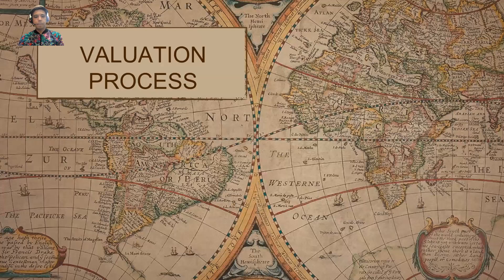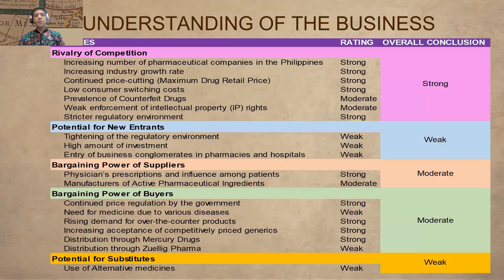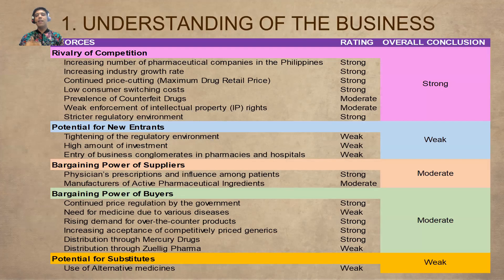Now we'll discuss the valuation process. There are five steps. Number one is to understand the business — knowing the ins and outs: our strengths and also the strengths of competitors or rivals within the same industry. One tool available is Michael Porter's Five Forces.